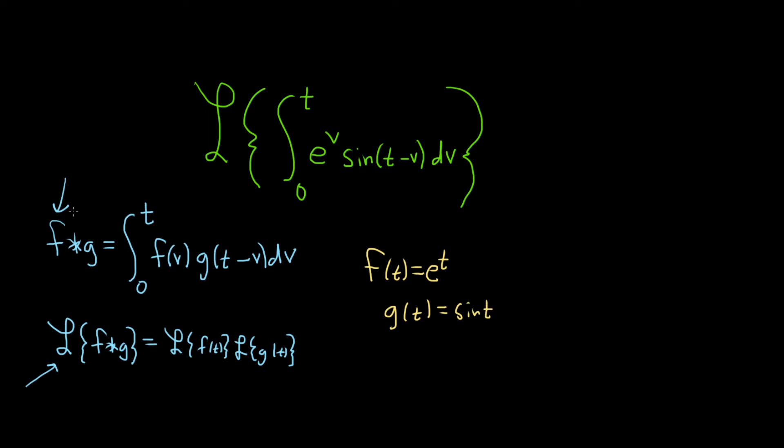And that should make sense. If you want, you could check. If you just take this and this and plug it into this formula, you'll see that you get the definite integral from 0 to t. f of v. Well, what's f of v? Well, f of t is e to the t. So it's e to the v. So it does match.